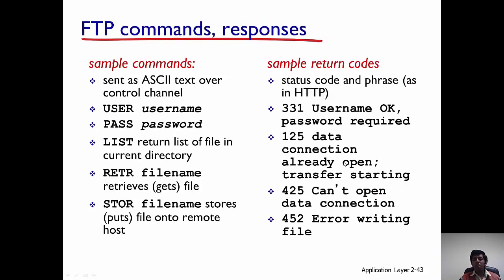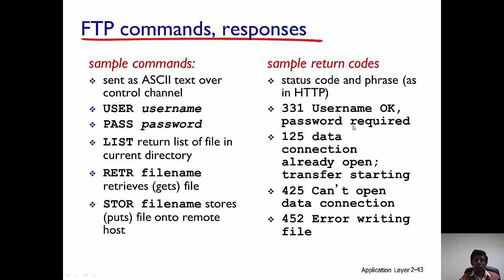Here are some sample commands and responses you can use for FTP. The USER command is for typing the username, and PASS is the command for typing the password. Once you type the username you could get return codes back — for example, 331 means the username is OK and a password is required. You could try these out on your own. Thank you.